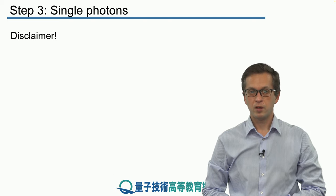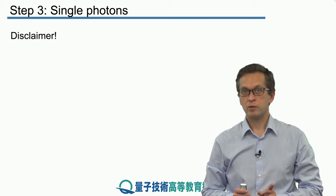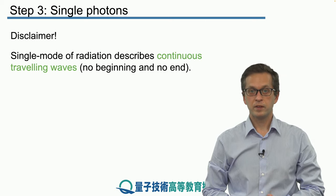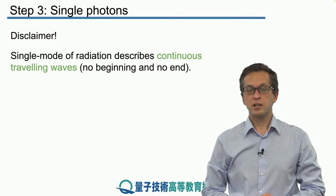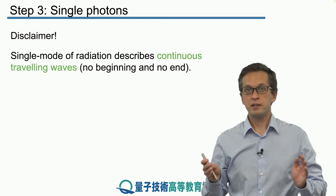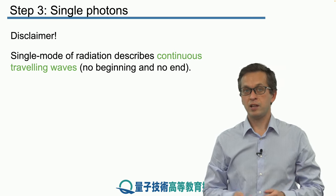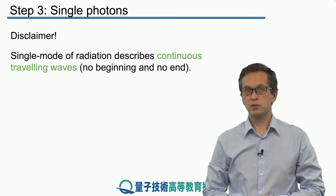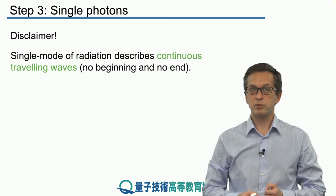Now at the beginning of this step we said that we are considering only a toy model. So keep this in mind that a single mode of radiation describes continuous traveling wave, meaning that this wave does not have beginning and does not have an end. This is clearly an unphysical model for a single photon, which as we said is produced by spontaneous emission.